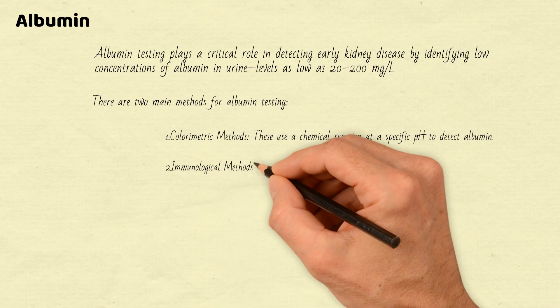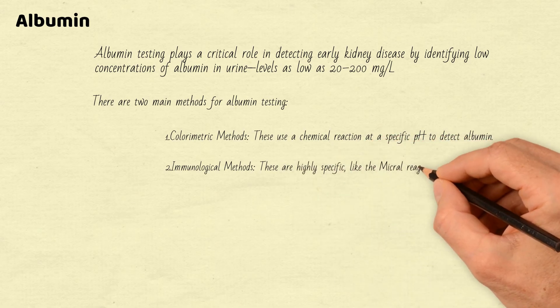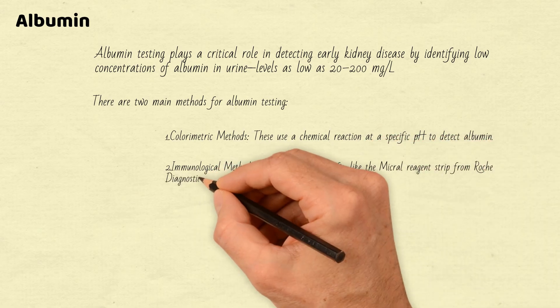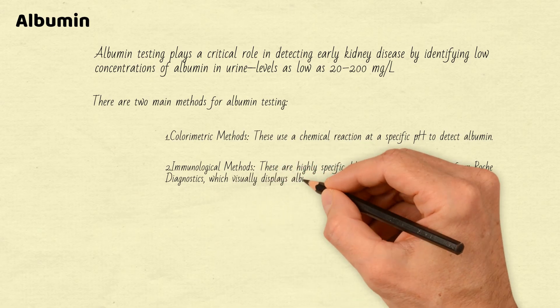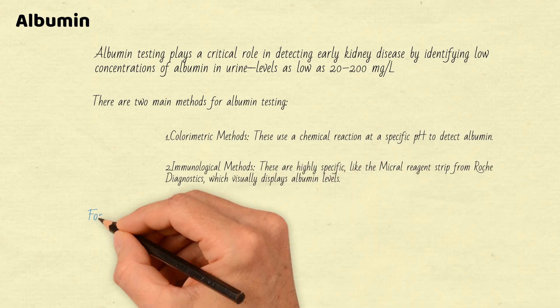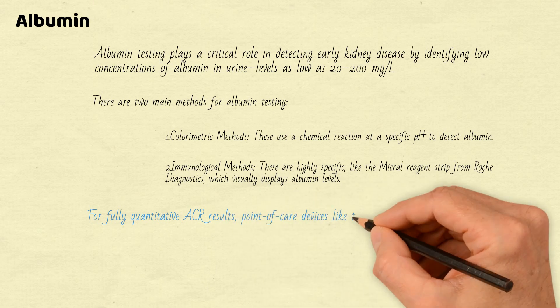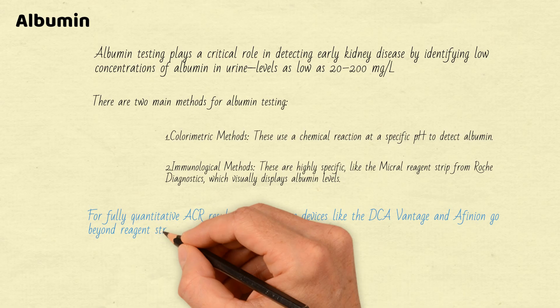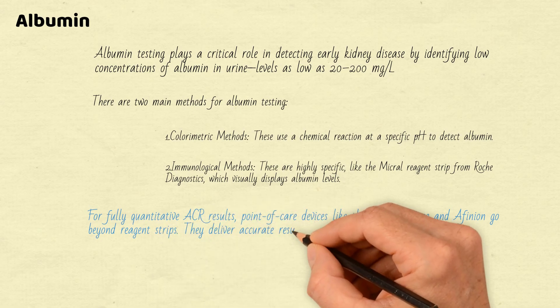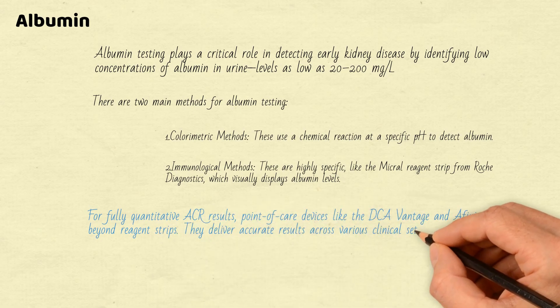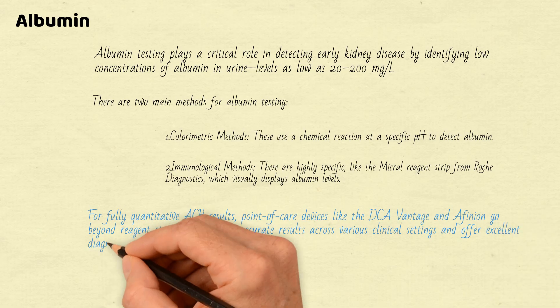2. Immunological methods: These are highly specific, like the micro reagent strip from Roche Diagnostics, which visually displays albumin levels. For fully quantitative ACR results, point-of-care devices like the DCA Vantage and Affinion go beyond reagent strips. They deliver accurate results across various clinical settings and offer excellent diagnostic performance.